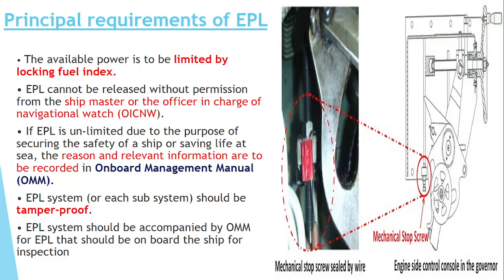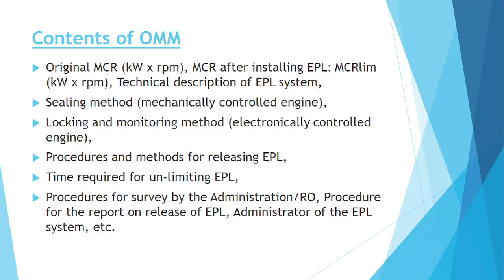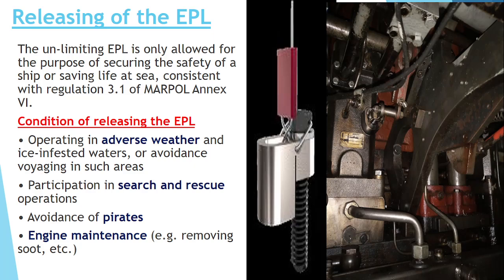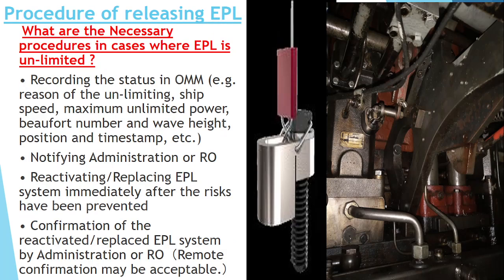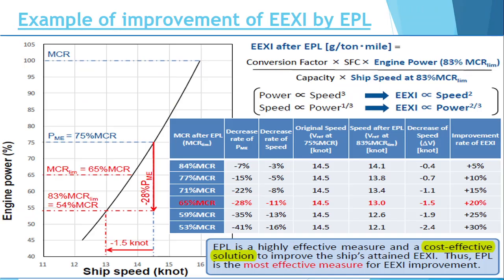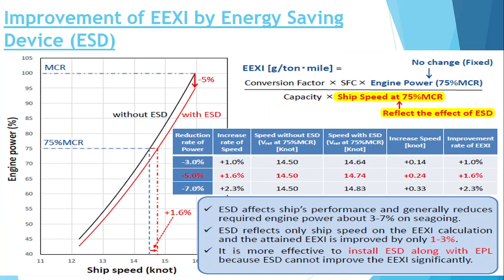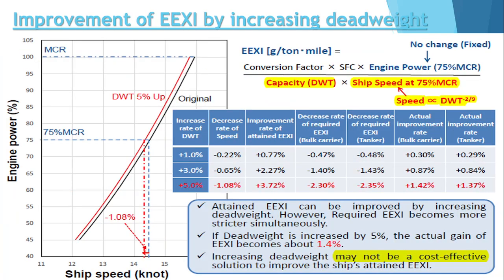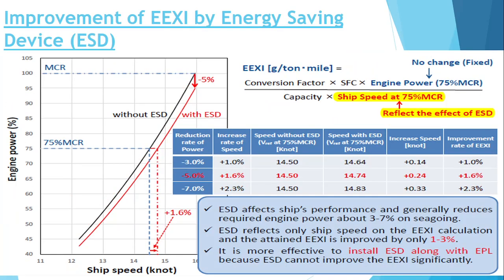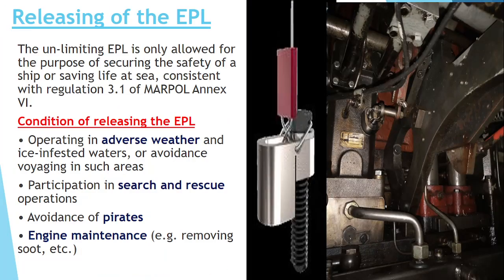What are the requirements of EPL? What are the contents of the Onboard Management Manual? In which case will the engine power limitation be released? What is the procedure of releasing the EPL, and what should you do after releasing? What are the other methods of improving the EEXI, like energy saving devices and deadweight increasing?